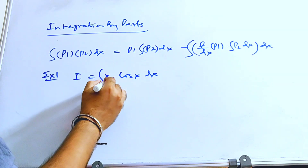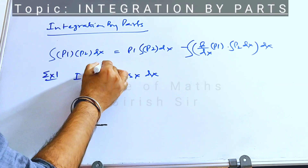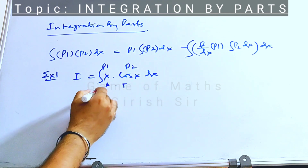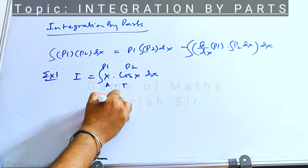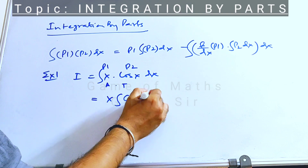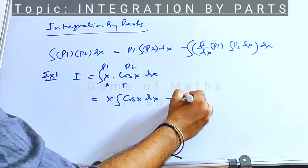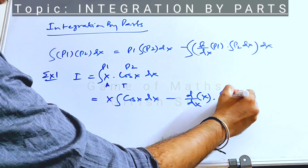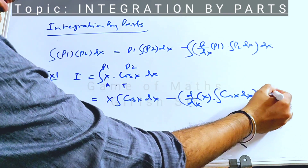Let's see the first example. Here we have a product of algebraic and trigonometric functions, so I select the algebraic part as P1 and the trigonometric part as P2. Using the formula, I take P1 out of the integral, integrate part two, then subtract the derivative of part one times the integral of part two — and that product is integrated again.